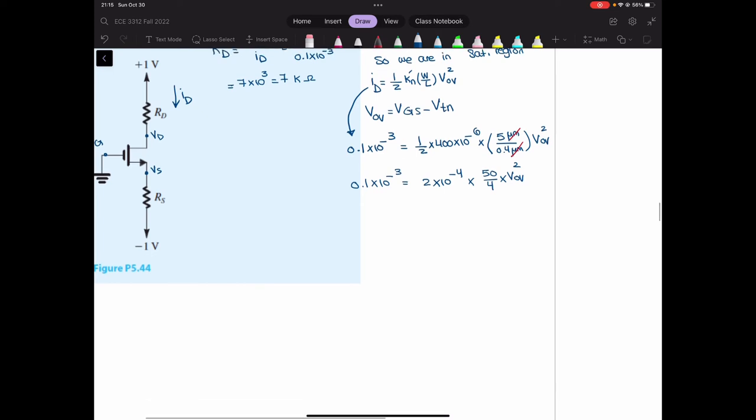Now, on this side, I can write this as 10 to the negative 4 equals. This 2 and 2 will be cancelled. So I'm going to get 25 multiplied by 10 to the negative 4 multiplied by VOV to the power of 2. Now 10 to the negative 4 and 10 to the negative 4 will be cancelled. So VOV to the power of 2 is 1 over 25. That is equal to 0.04.